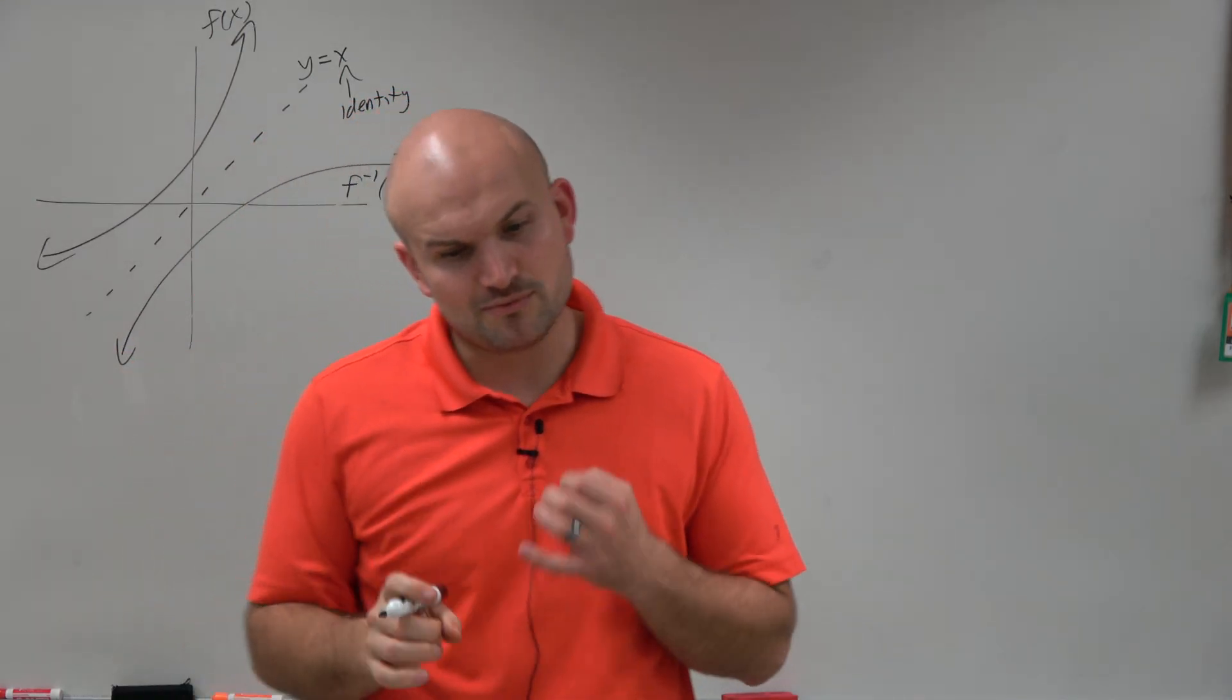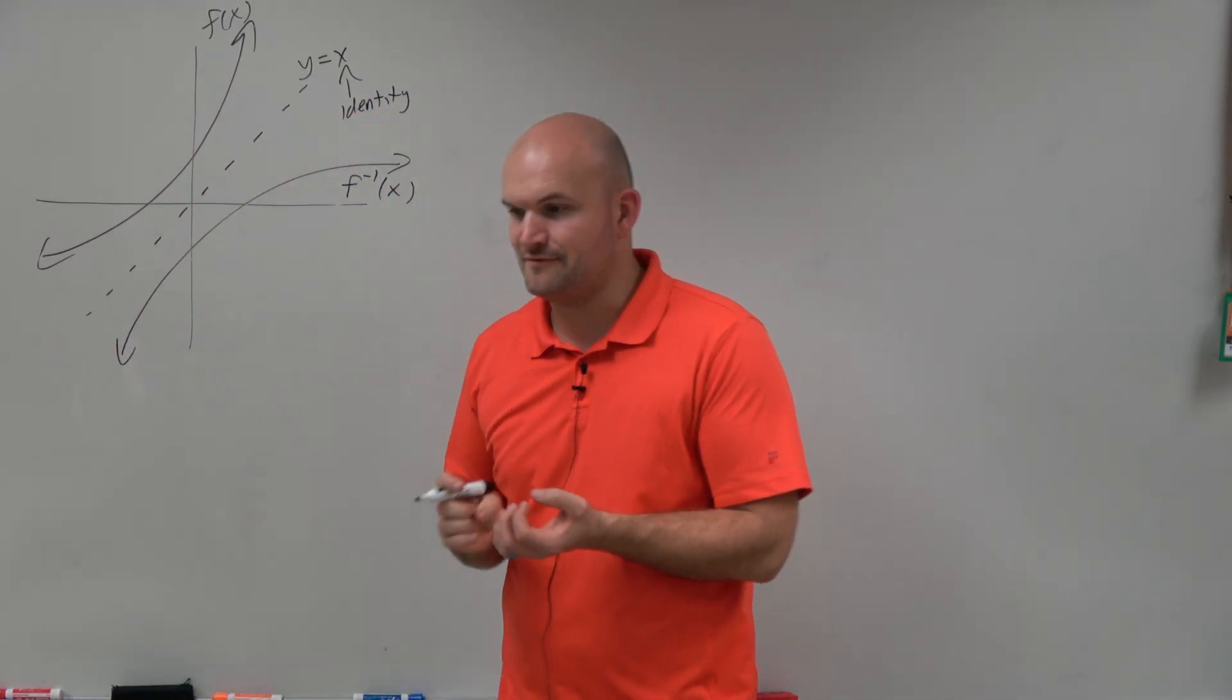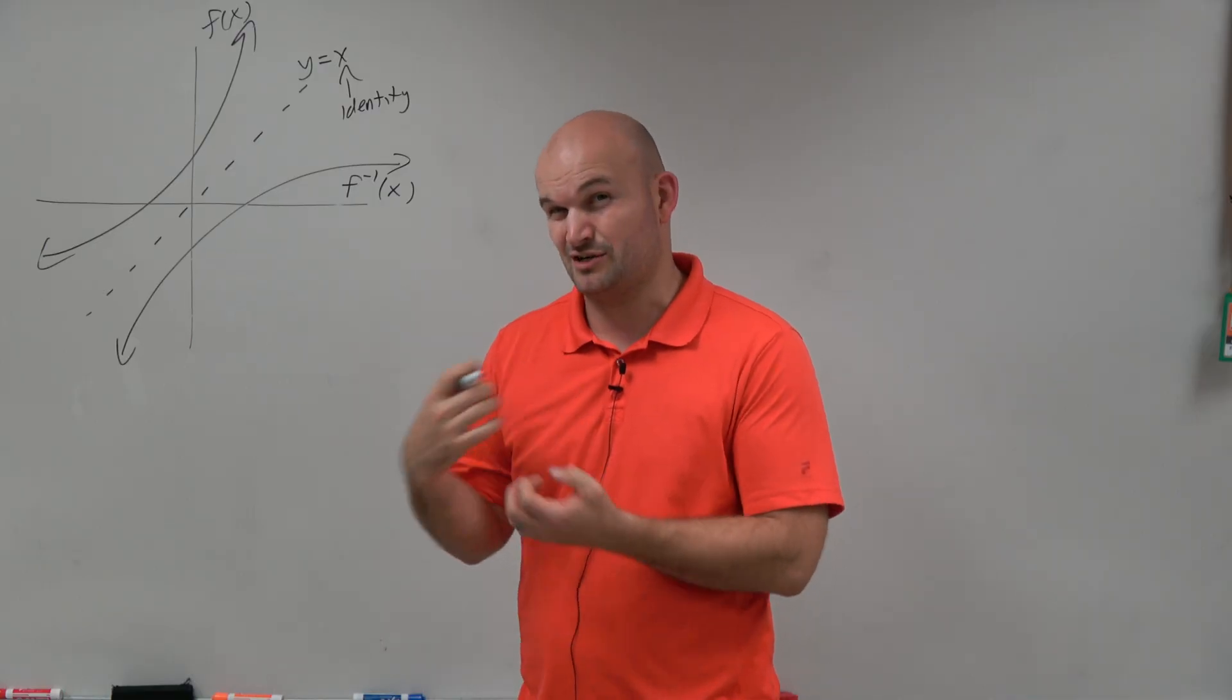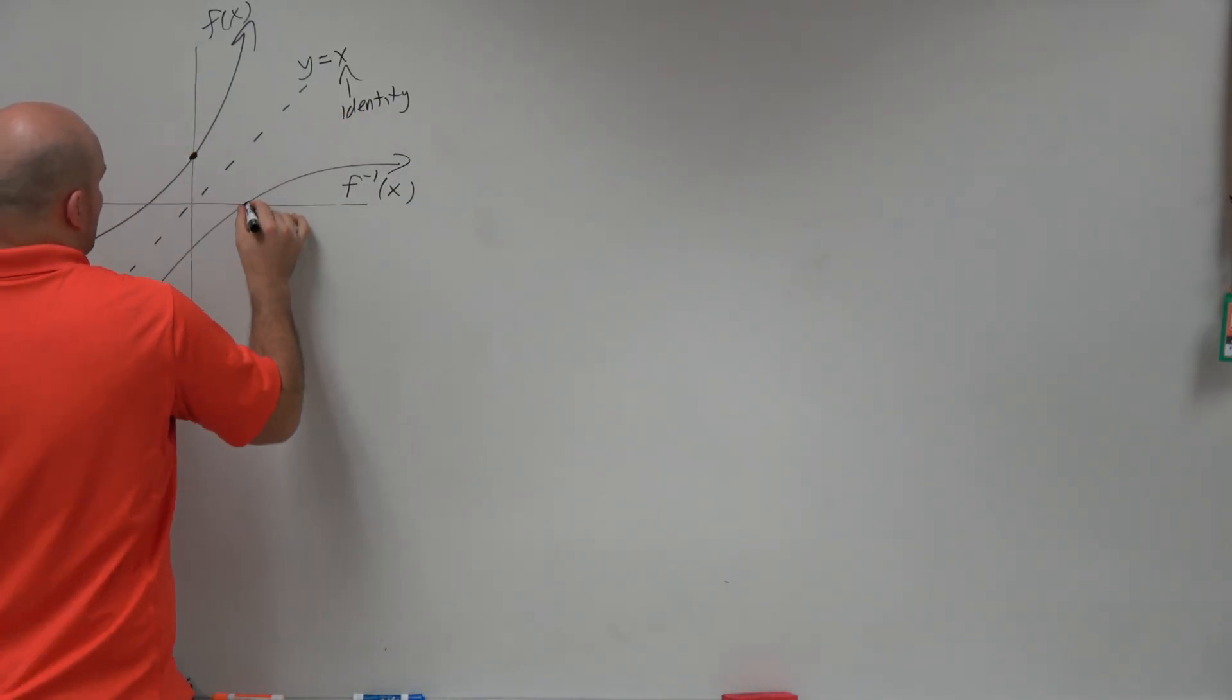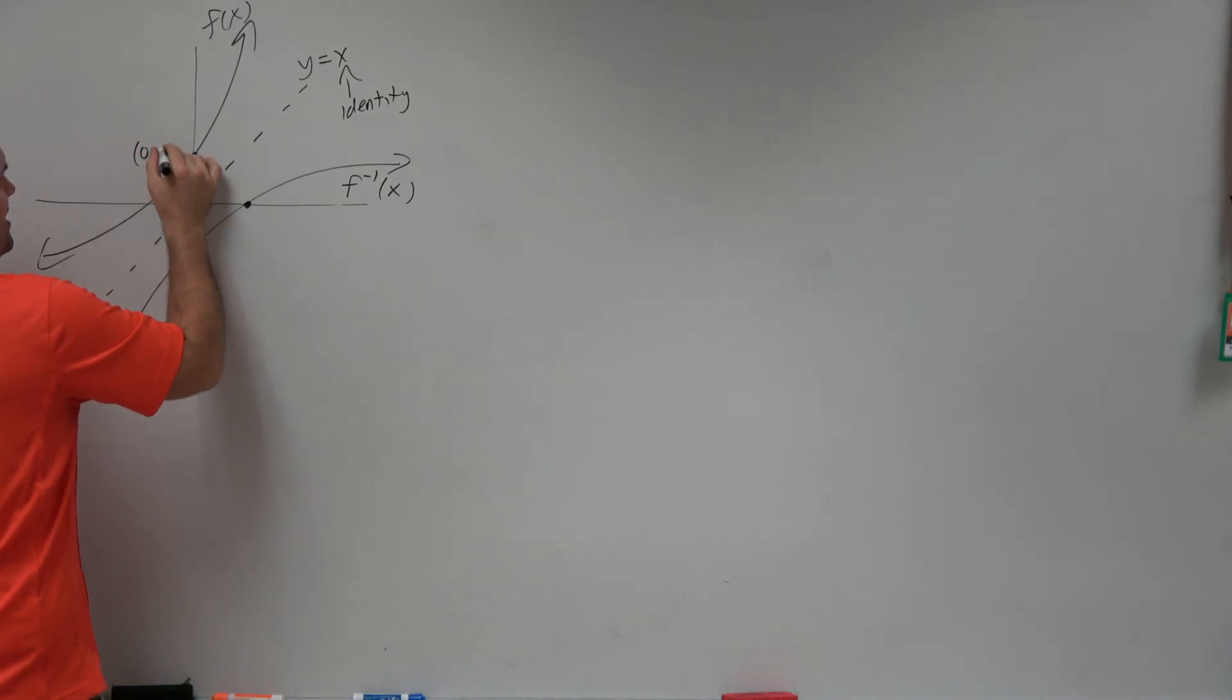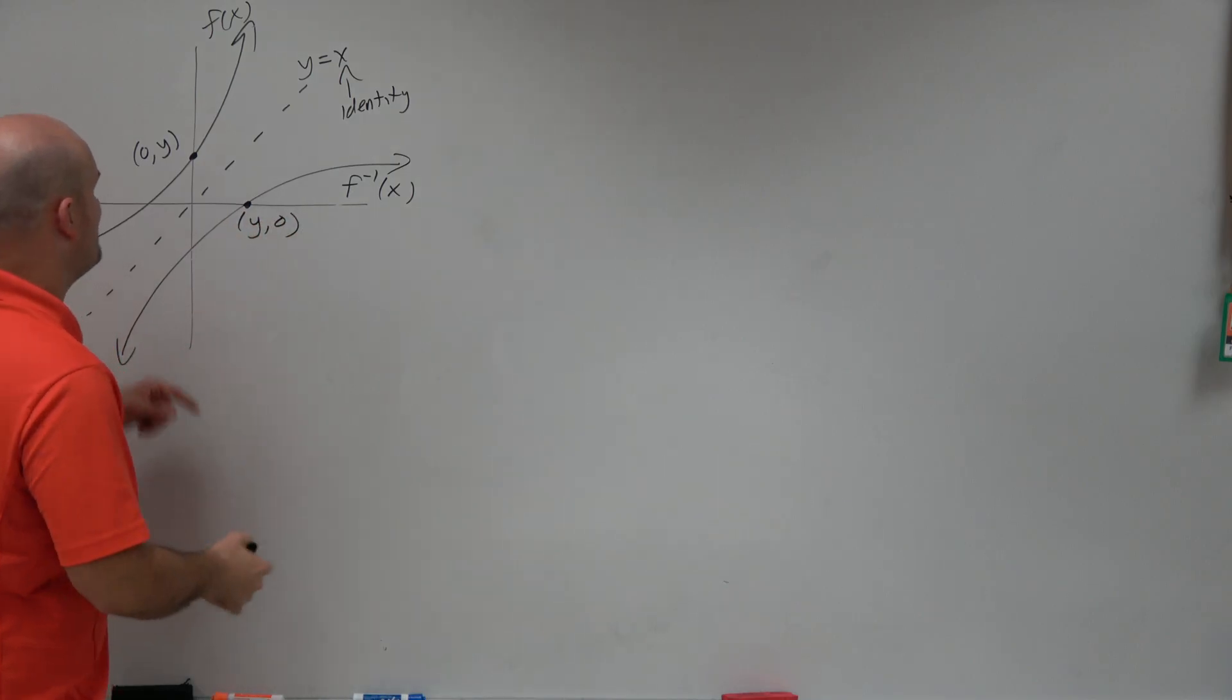Now, this works in a couple different ways. A reason why this works is let's just look at some points. Let's pretend this point here is 0 comma y. Well, then this point, when it's reflected across, is now y comma 0.